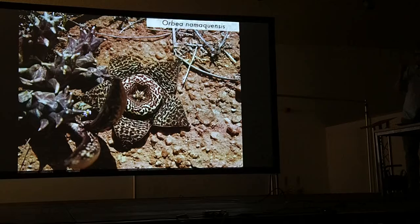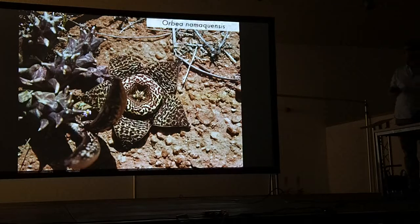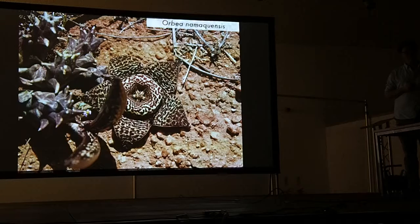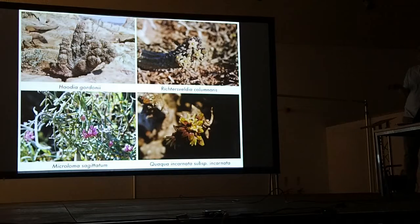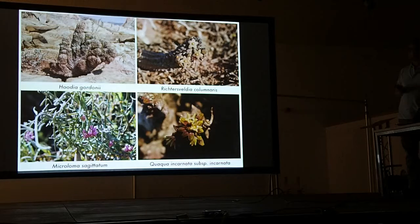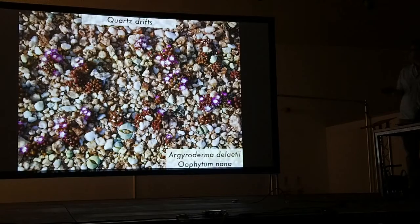Here's another Stapeliad which has markings of yellow and red supposed to mimic rotting flesh — and it also smells a lot like rotting flesh. And here's a final collection of some of the succulent Apocynaceae that I saw in the Richtersveld as well.